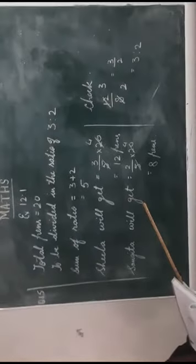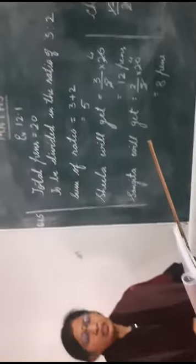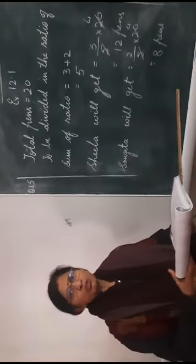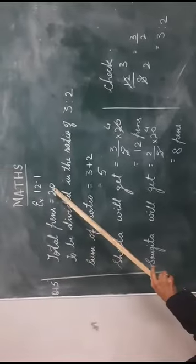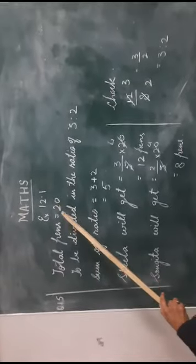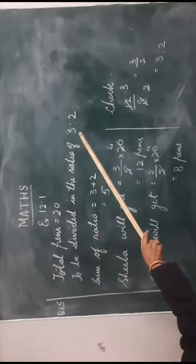The question is divide 20 pence between Sheila and Sangeeta in the ratio of 3 to 2. So total we have 20 pence and we have to divide these 20 pence in the ratio of 3 to 2.